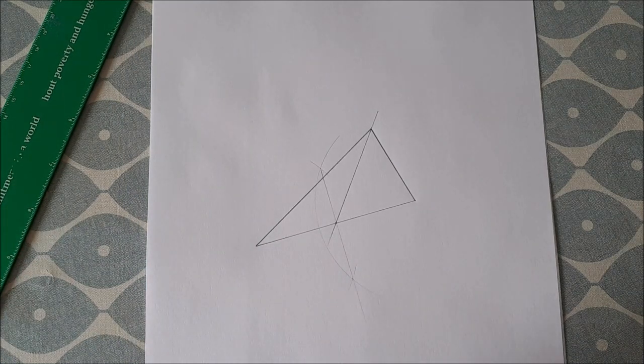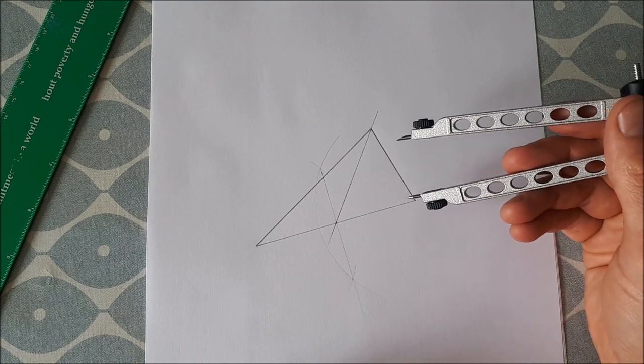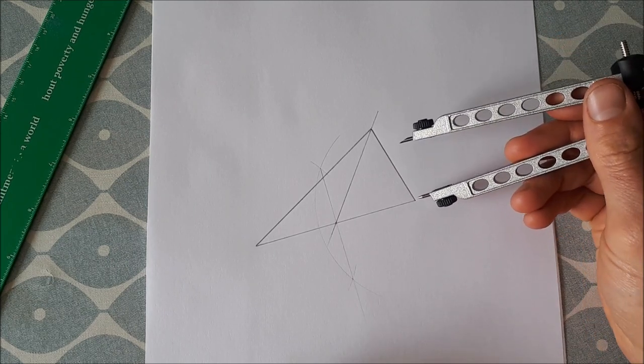Okay, so now we want to go and bisect another line. So I'm going to bisect this line here. So again, make sure your compass is over half the length of the line.